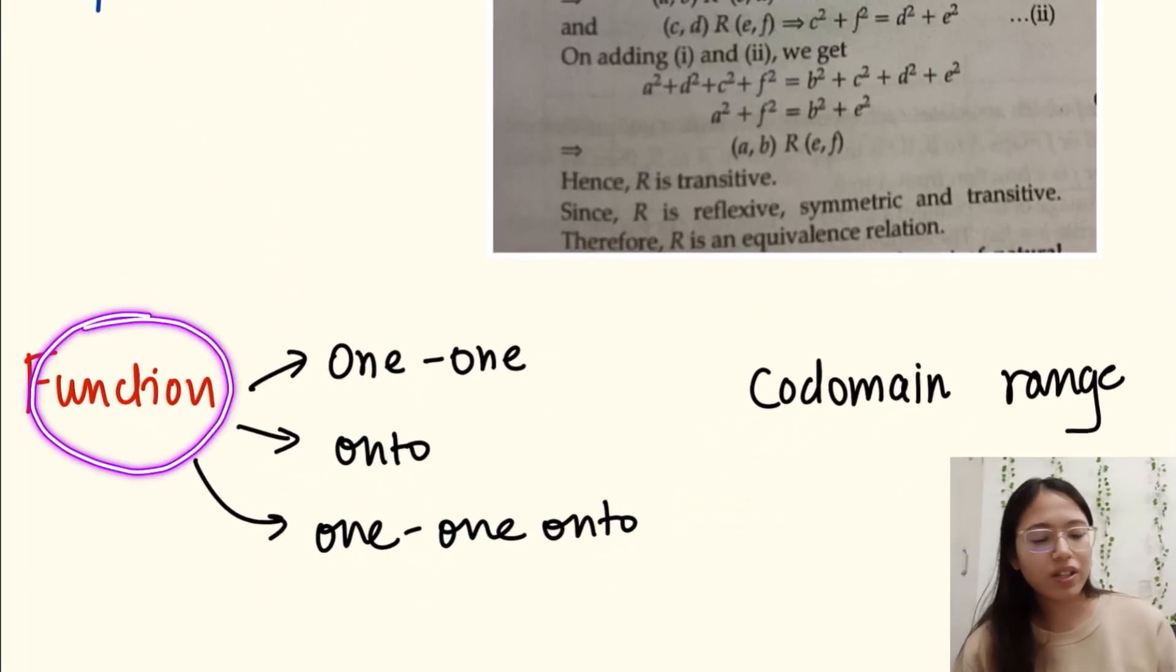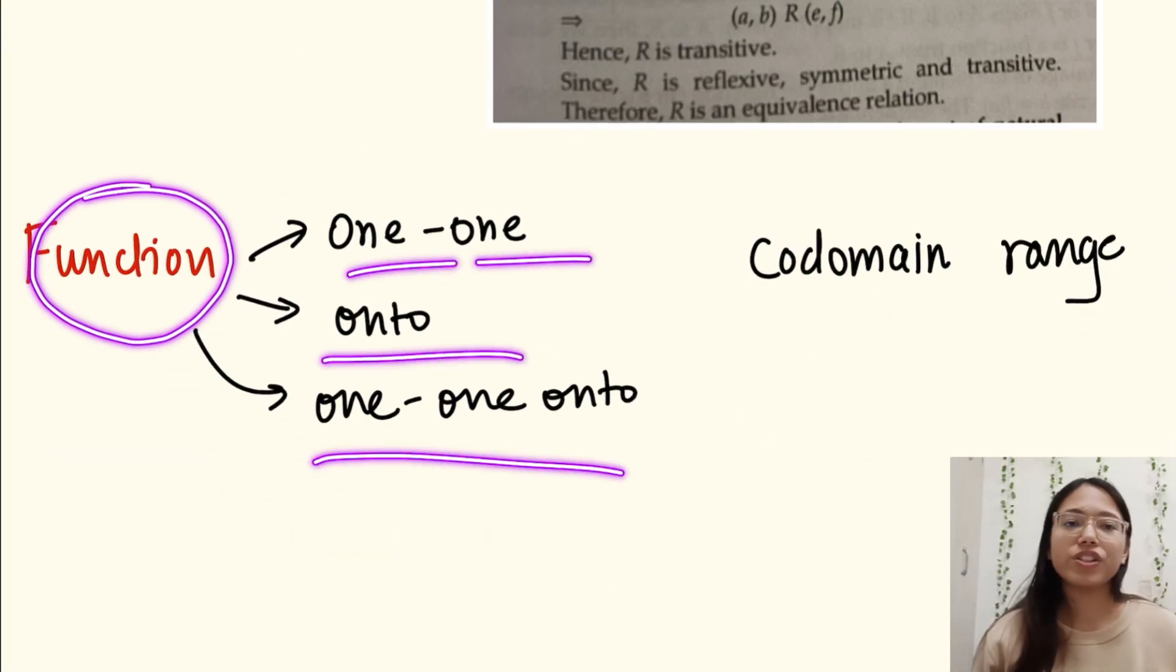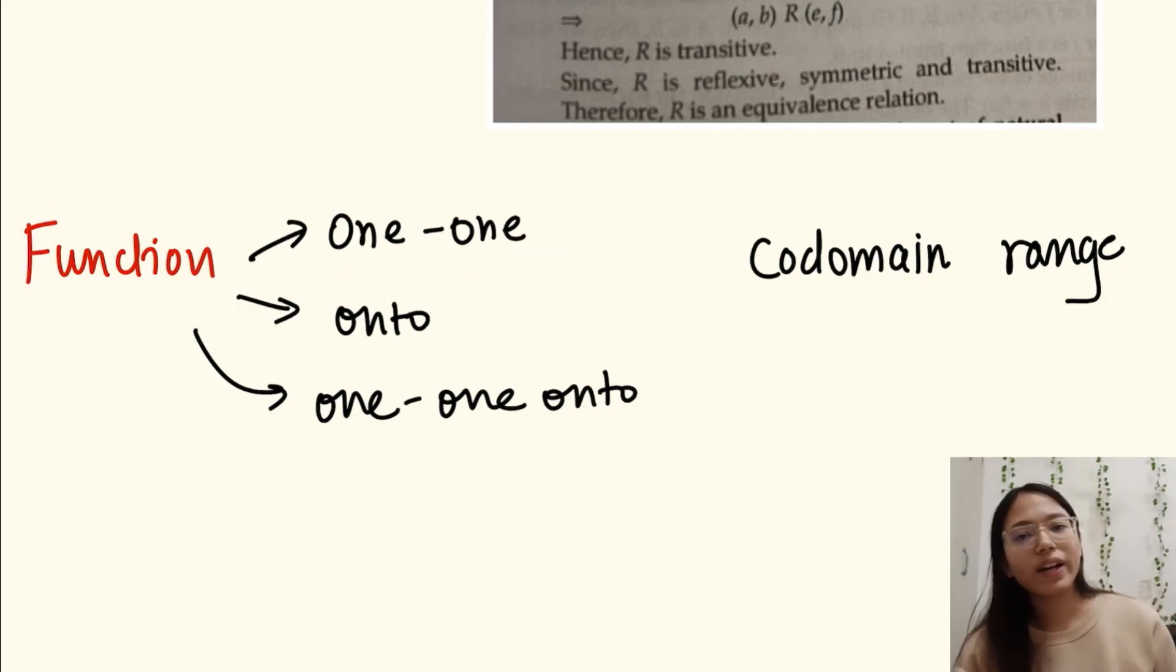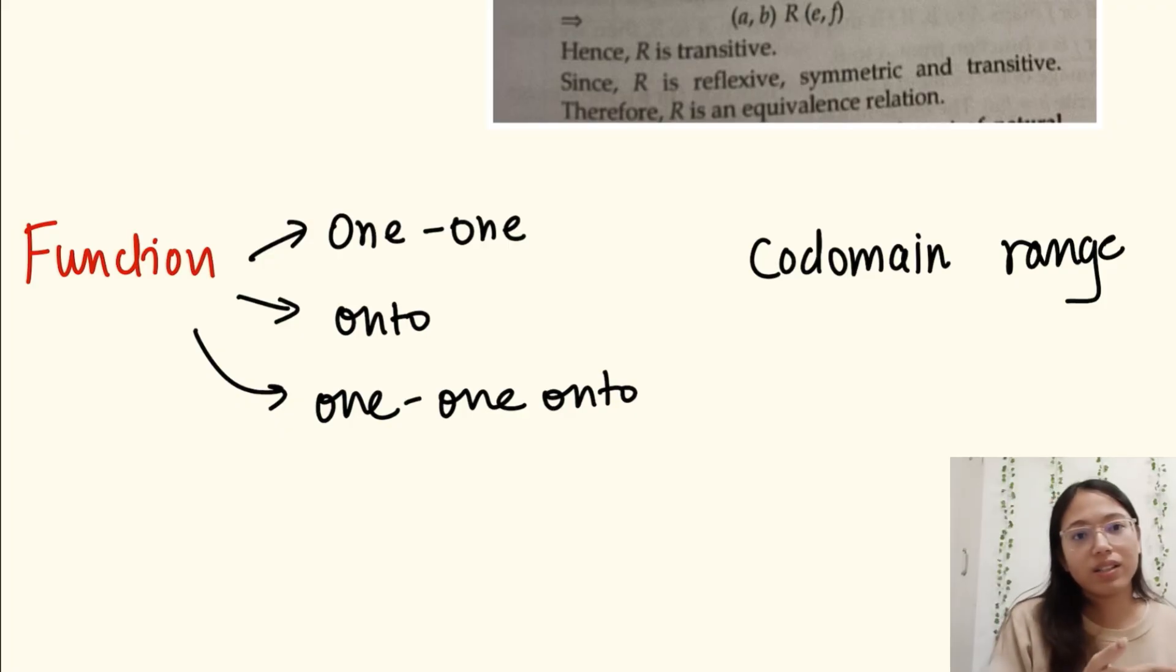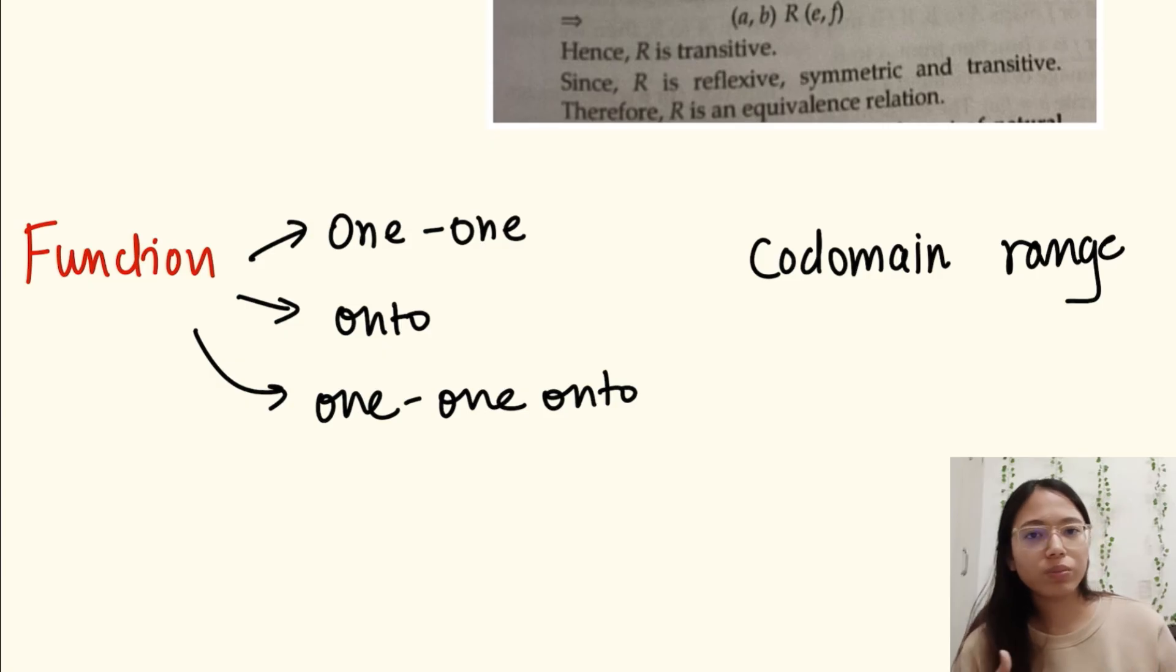In functions: one-one function, onto function, one-one onto. You should be well aware about what is injective, surjective, bijective. Sometimes they may ask you to prove that it is a surjective function. If you don't know the meaning of surjective, then how will you be able to solve it? Co-domain, range, these are very simple things. I've already taught all these chapters in my channel. If you check out relations by AB Education Hub or functions by AB Education Hub, everything is covered from scratch.